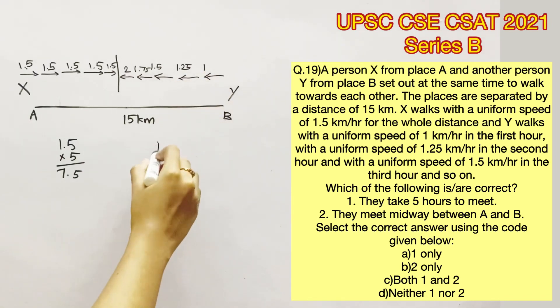Now if you take Y, Y covered 1 kilometer for the first hour, 1.25 for the second, 1.5 for the third, 1.75 for the fourth hour, and 2 kilometers for the fifth hour. So the total distance traveled by Y would be the sum of all these values, which also adds up to 7.5.